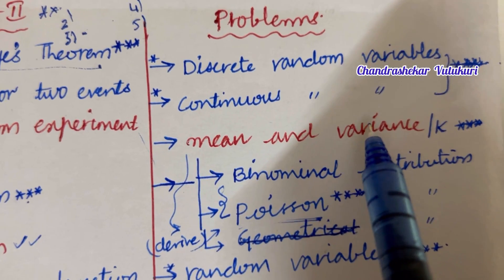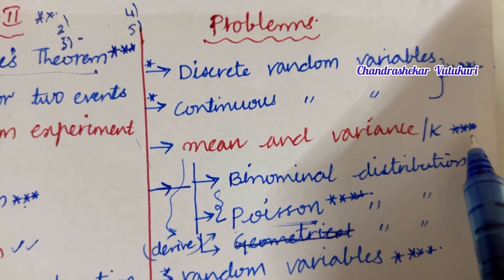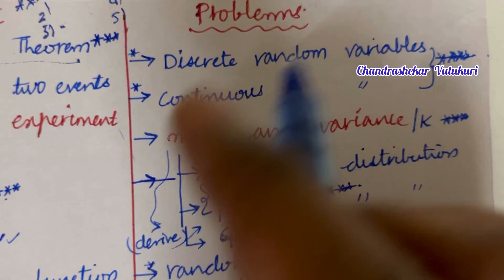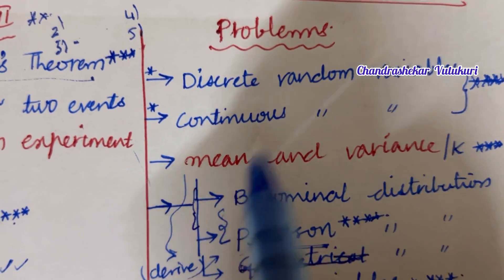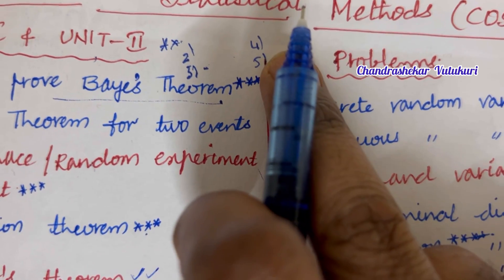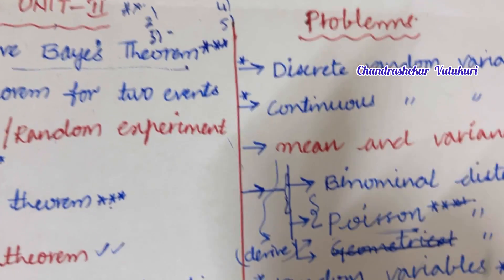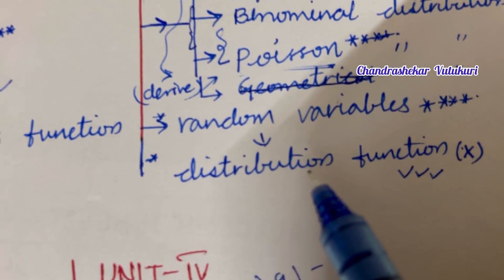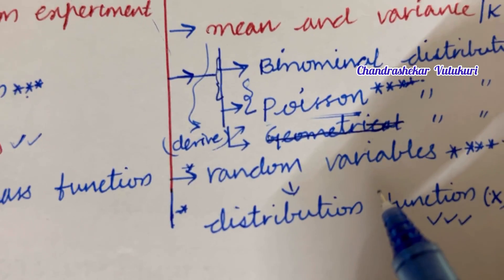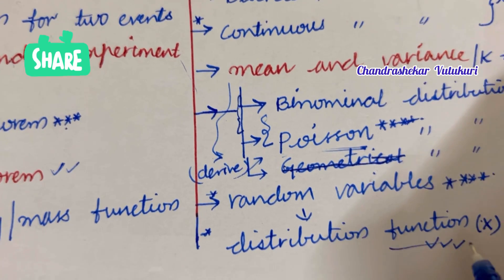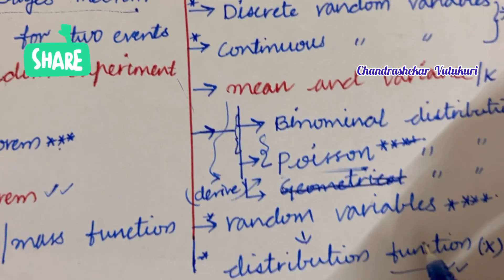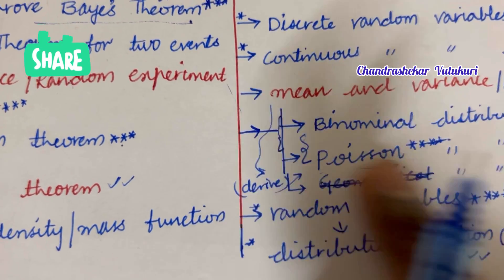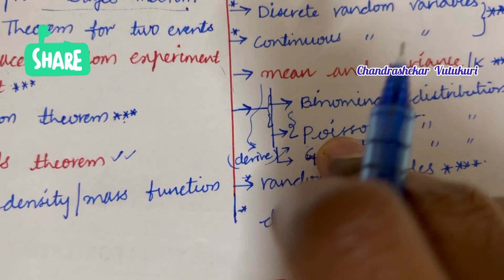The mean and variance as well as finding the value of k are said to be the topmost questions. The binomial distribution and Poisson distribution — from these two concepts, either in the 4th or 5th question, you will be getting binomial as well as Poisson distribution problems. Random variables and the distribution function may be the short question, and you need to derive mean and variance for binomial as well as Poisson distributions.